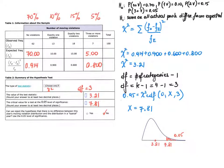Here are the tables referenced in the question. There are four categories representing the columns: no violation, exactly one violation, exactly two violations, and three or more violations. The sample size was 100. The percentages taken directly from the question are: 70% of customers have no violations, 10% have exactly one, 15% exactly two, and 5% three or more violations.